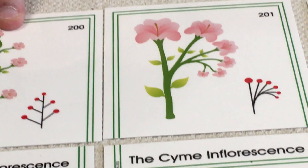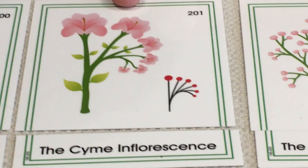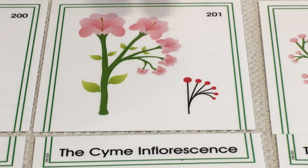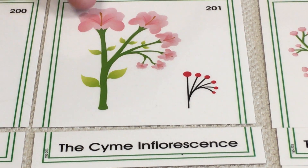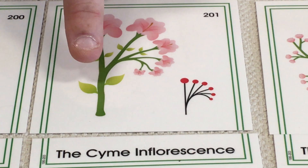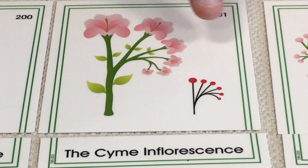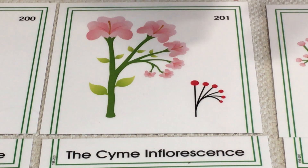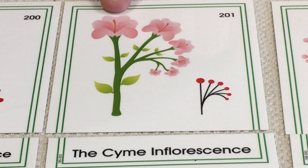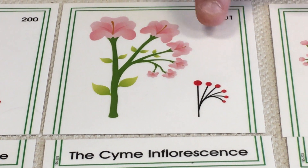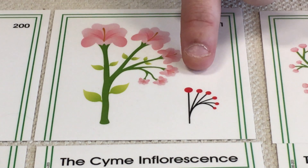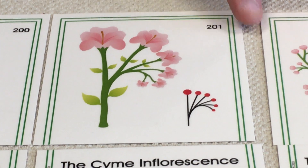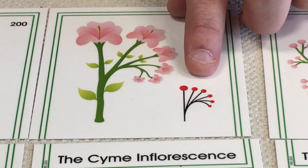That was raceme. Next, we have the cyme inflorescence. Again, one major peduncle. Then you have the pedicels attached off to the side, almost falling over like a wave. And again, one bud or one bloom at the end of each pedicel. Cyme — almost like a wave.